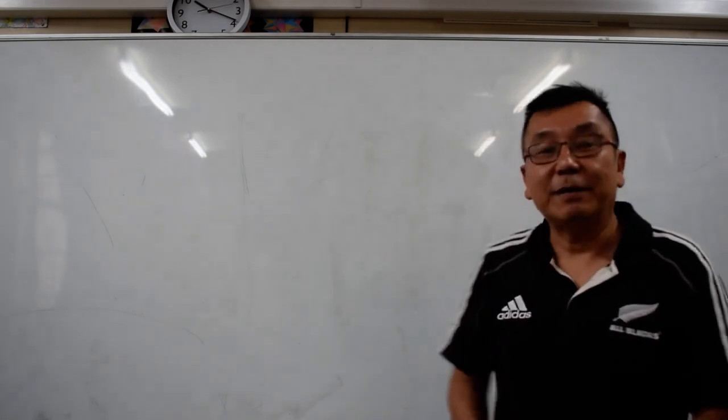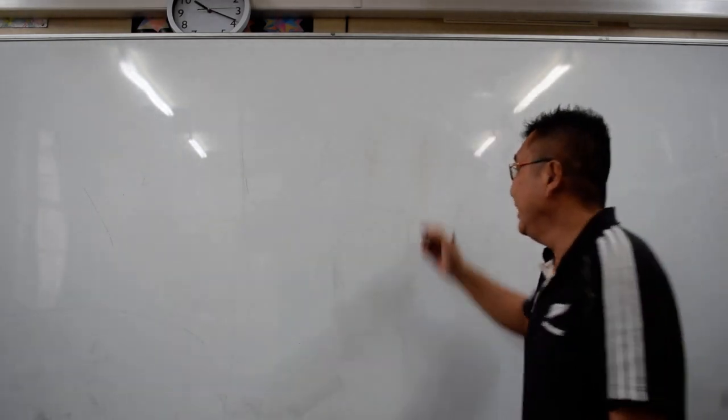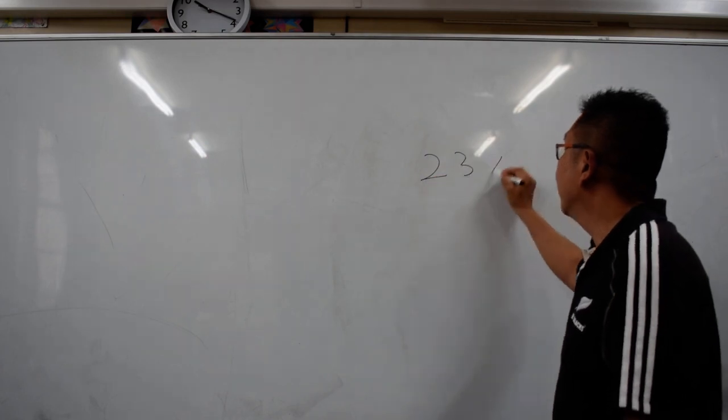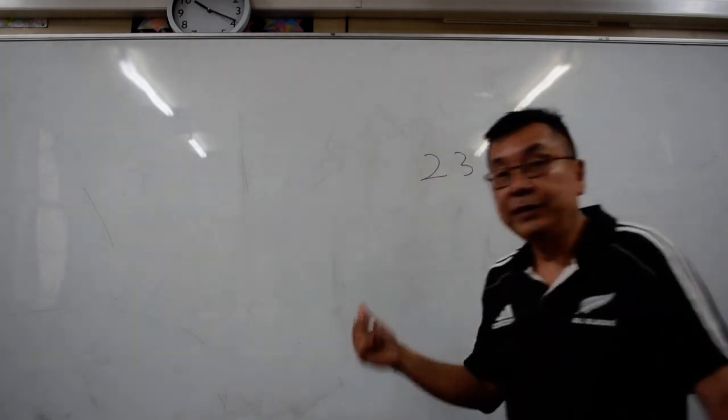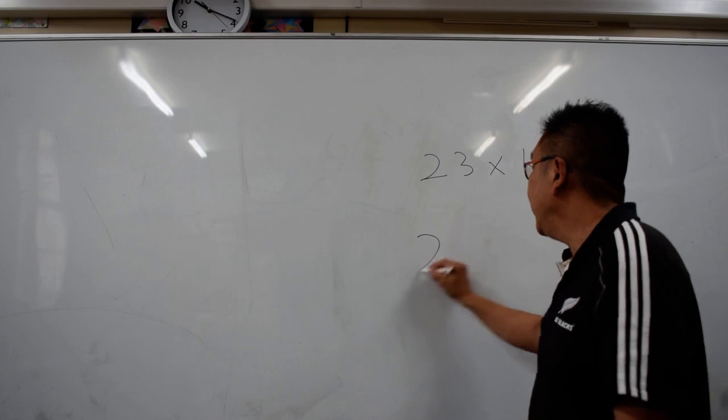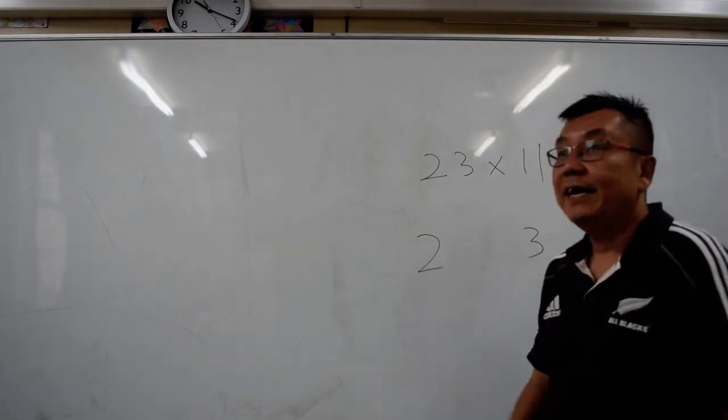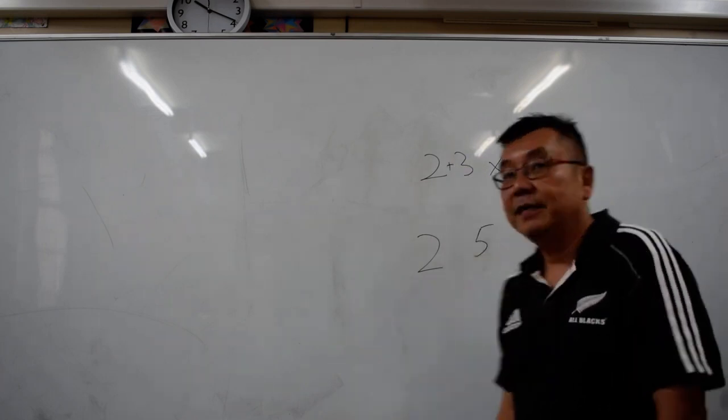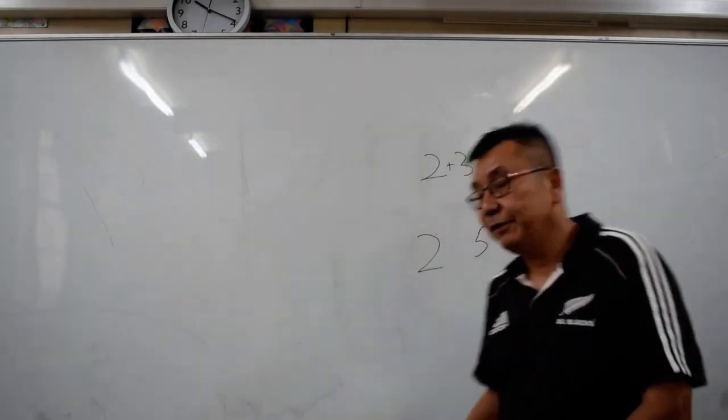Next we are going to do a multiplication of 11. 11 is simpler still. If I have 23 times 11, what I do is that the 2 and 3 remain the same at the corner and I just add 2 and 3 together. So 2 plus 3 and the middle number is 5.